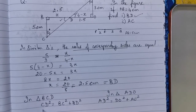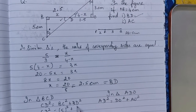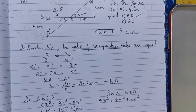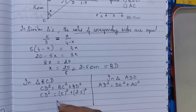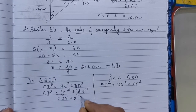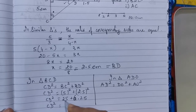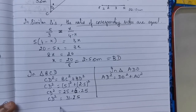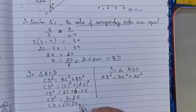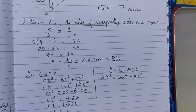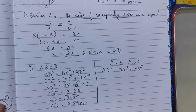Now we will substitute the values. CD² equals BC² plus BD² — the value of BC is 5, so 5² plus 2.5² gives 25 plus 6.25. So CD² equals 31.25, therefore the value of CD is the square root of 31.25, which is 5.59 centimetres.